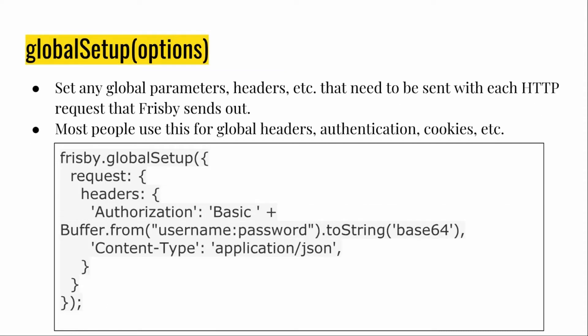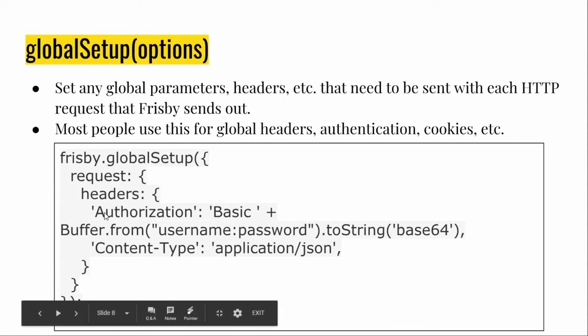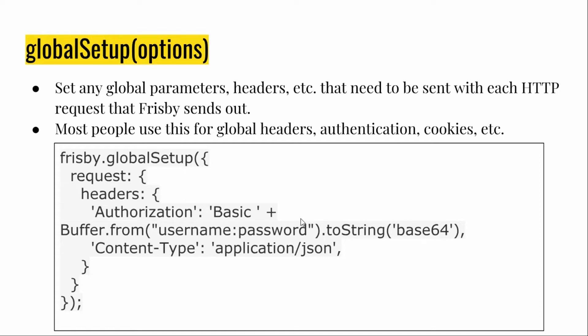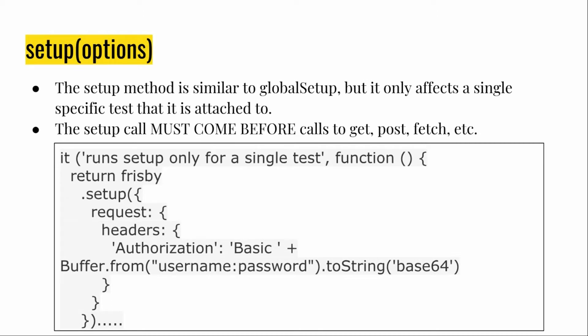Another main advantage of Frisbee is that it provides a global setup — basically a global parameter configuration. For example, if your API requires authorization, you can pass that into the global setup as a header: authorization basic equals buffer of username and password. This authorization string will then be available to all the requests you test in the subsequent 'it' blocks. Similarly, with the setup method, before running something in your 'it' block you can use setup, before, and after — and then use your save method for GET, POST, PUT, and DELETE.